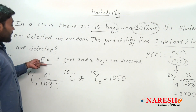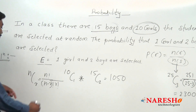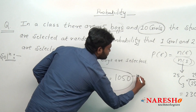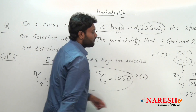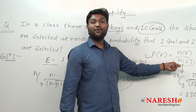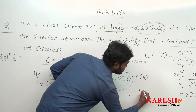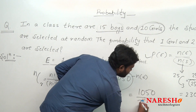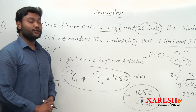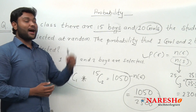So in this way, the probability of event where one girl and two boys are selected: we have number of event which is 1050 and number of sample space which is 2300. Putting these values into the probability formula, your answer will be 1050 upon 2300. So my dear student, this was the basic question on probability.